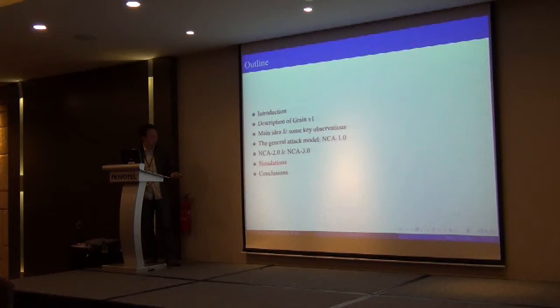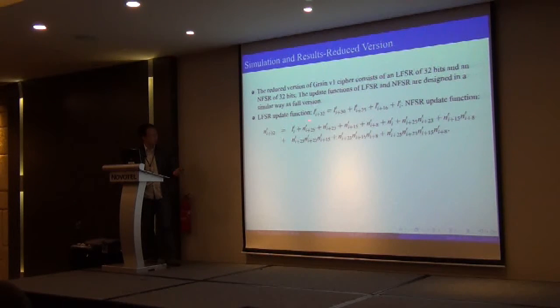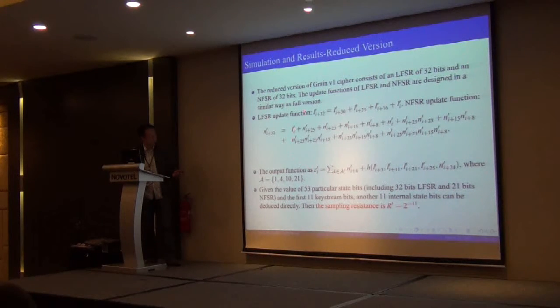Now we present our simulation results on the reduced version of Grain. We look at the reduced version of Grain-128 cipher consisting of a linear feedback shift register of 32 bits and a nonlinear feedback shift register of 32 bits. The update functions of the linear feedback register and nonlinear feedback register are done in a similar way as the full version. This is the linear feedback function, and this is the nonlinear update function. We can see that we also use the linear one to balance the internal state of the nonlinear one. The output function is defined here. The h function is the same as that in the original design. Here we choose a subset of bits from the nonlinear feedback register with cardinality of 4. We can see that the sampling resistance of this reduced version of Grain-128 has probability 2^{-11}.